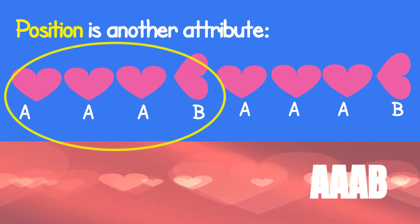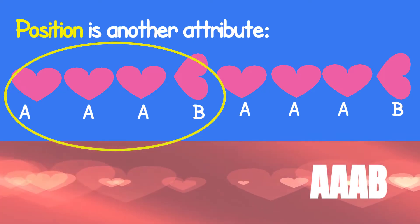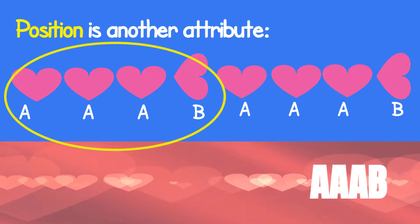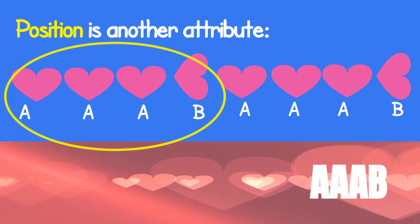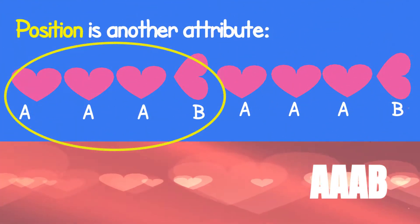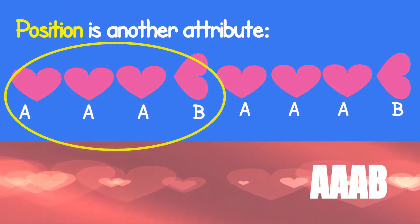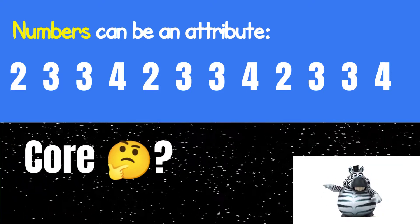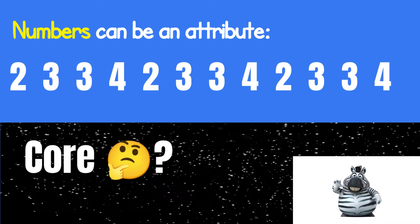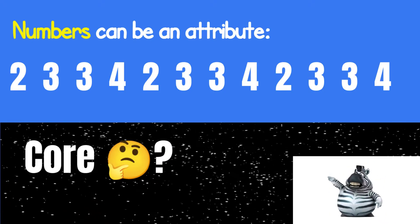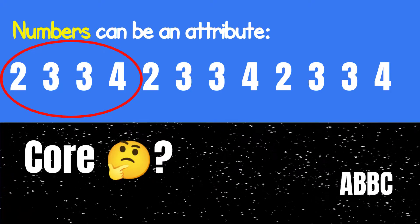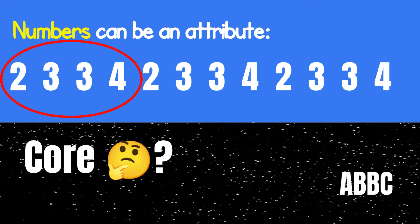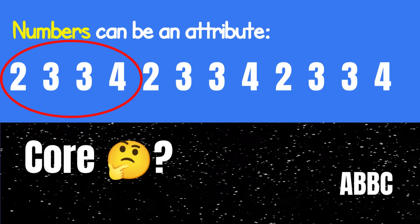Let's translate this pattern. A, A, A, B, A, A, A, B. This is an AAAB pattern. Numbers can be an attribute too! I love number patterns! Can you find the core of this pattern? Which part repeats? You got it! Two, three, three, four, two, three, three, four. This is an ABBC pattern.